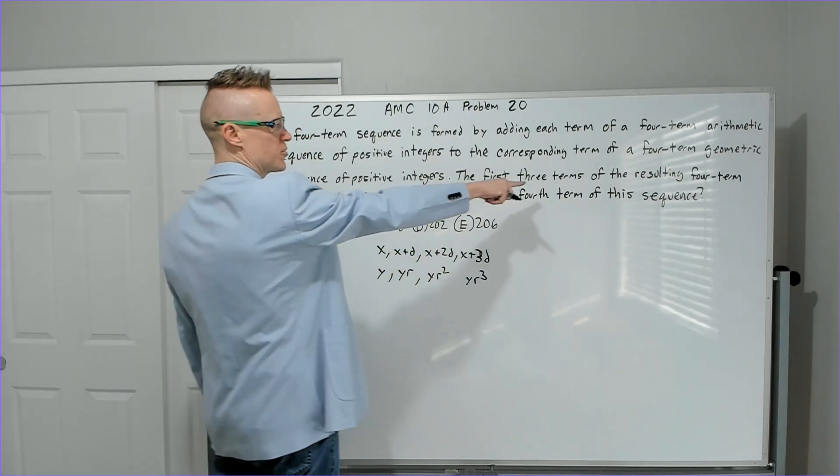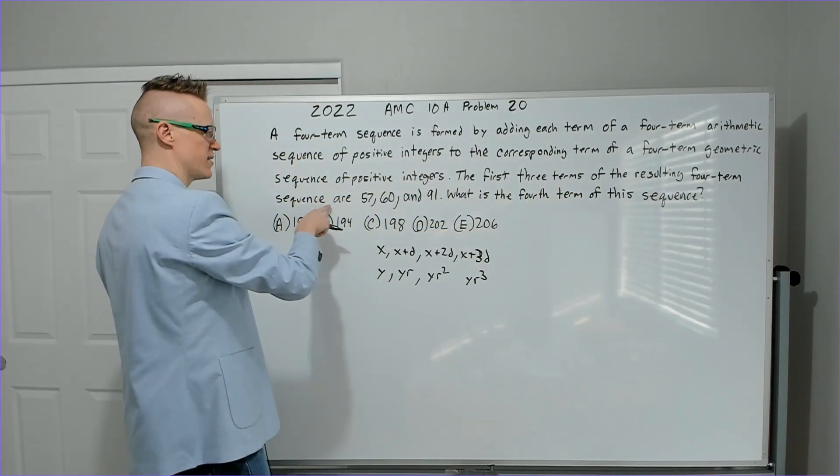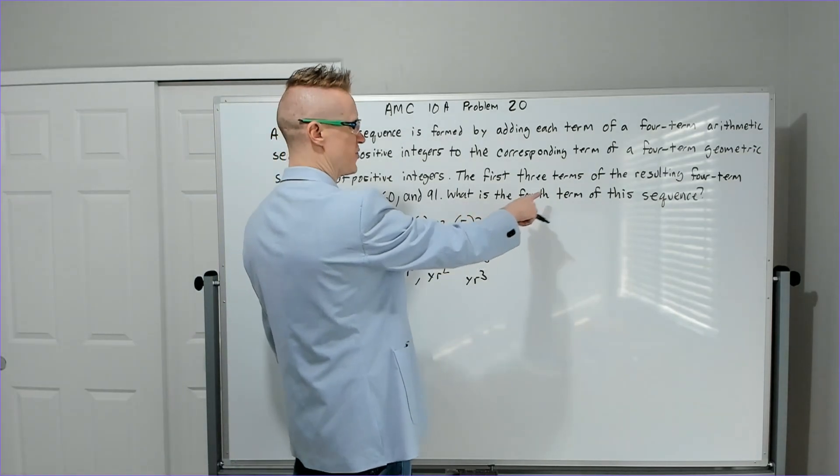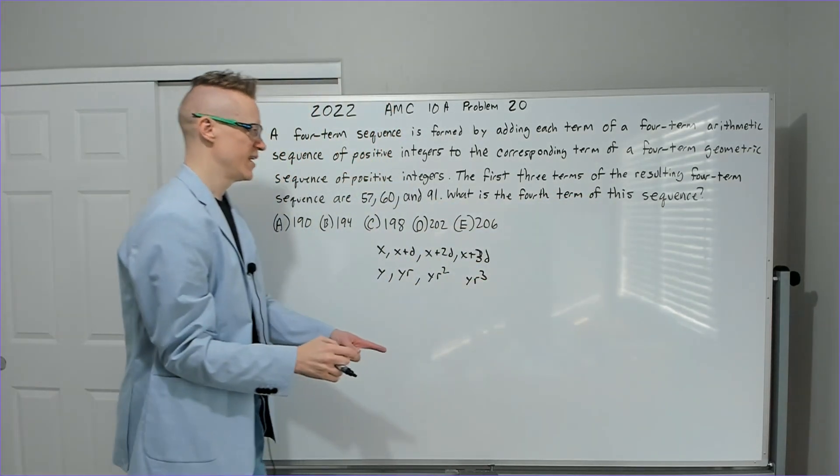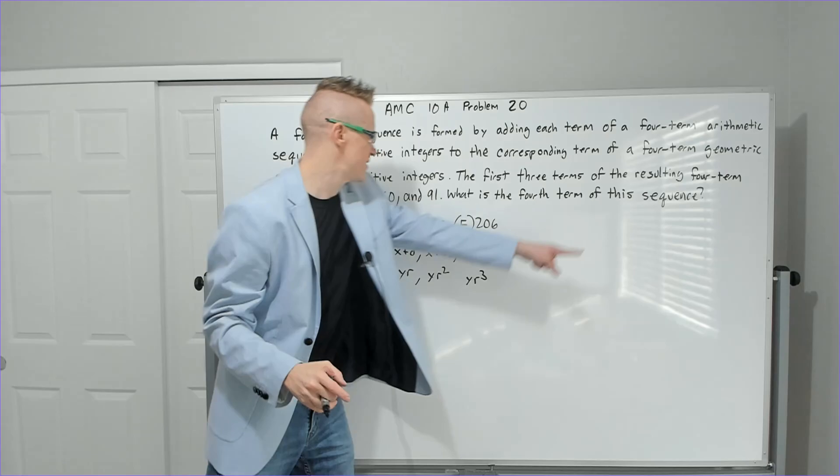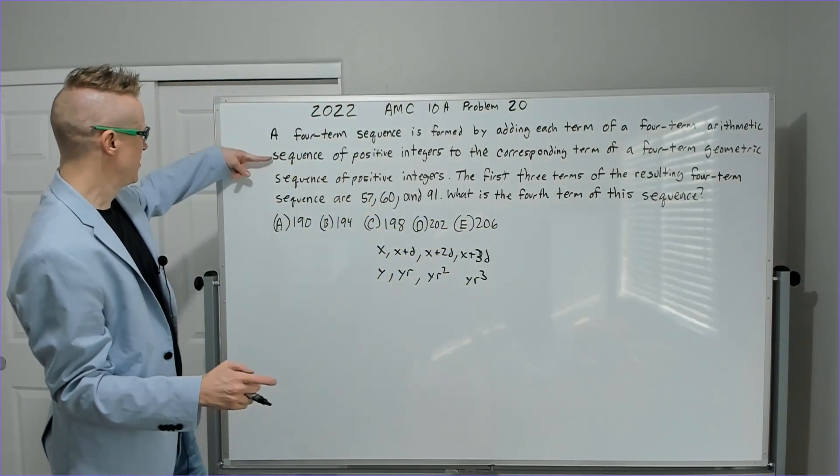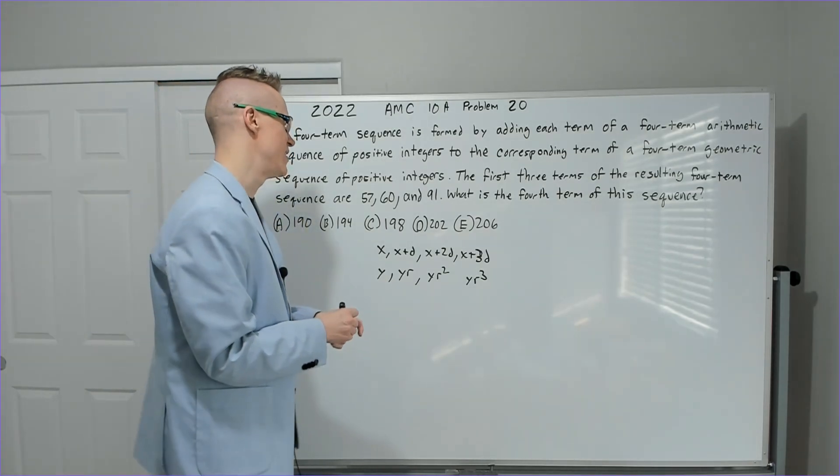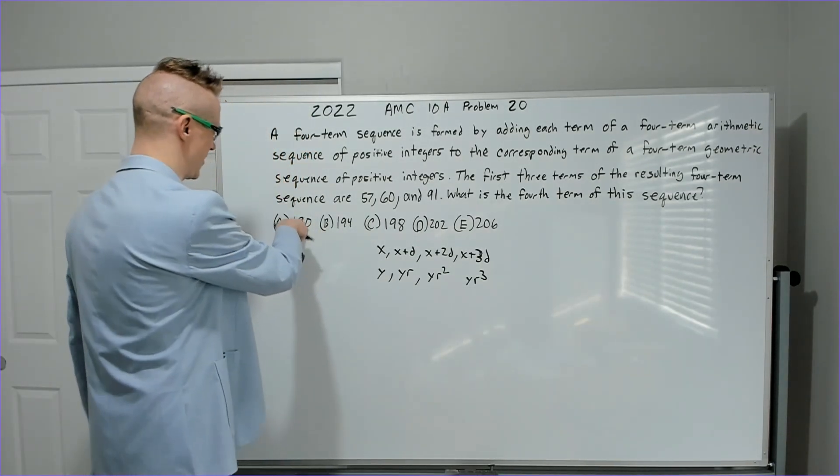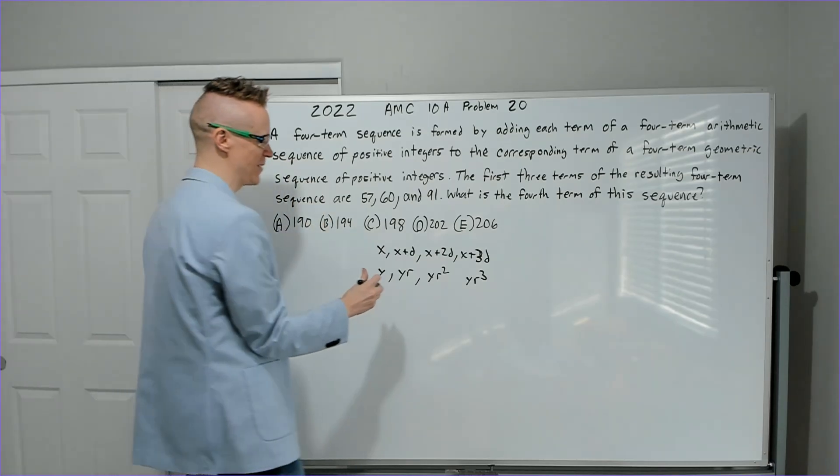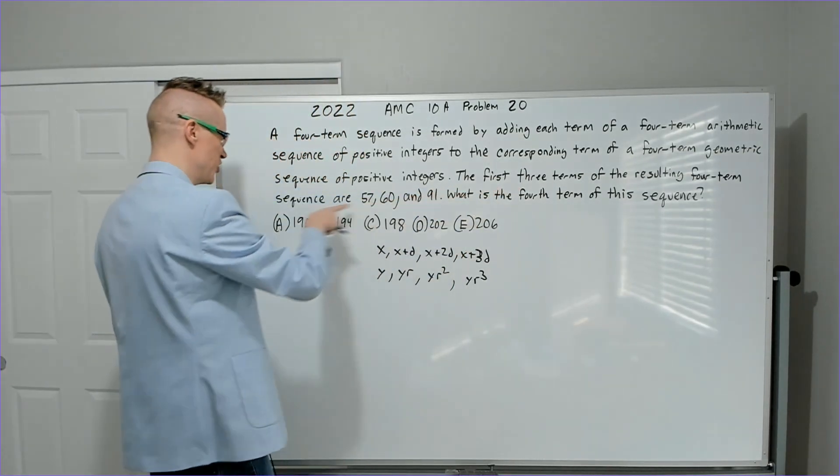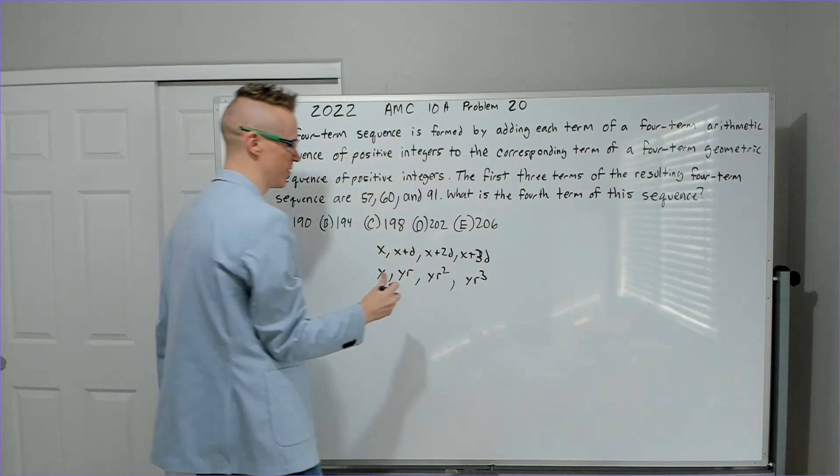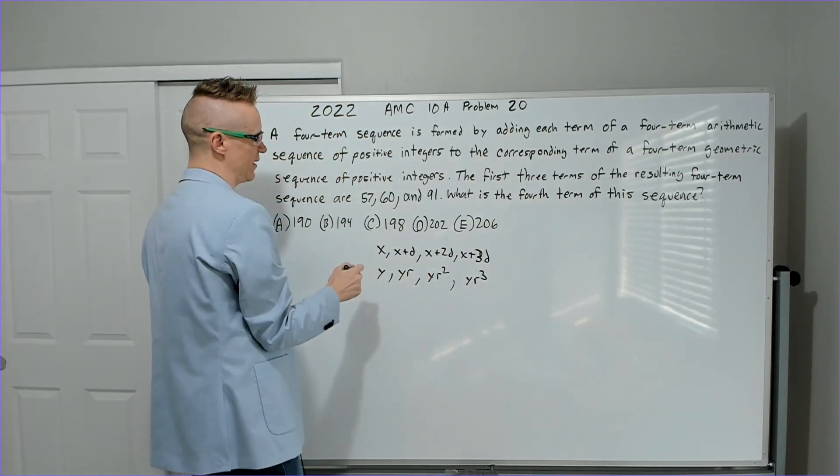The first three terms of the resulting four-term sequence are 57, 60, and 91. What is the fourth term of this sequence? Now, I thought about moving this sequence underneath here because then I would have four sequentially placed... but it'd be kind of crazy. It's just weird to have a board lined up like that. Because there's four terms, four... I don't even know. Weird, right? Okay, so let's go.